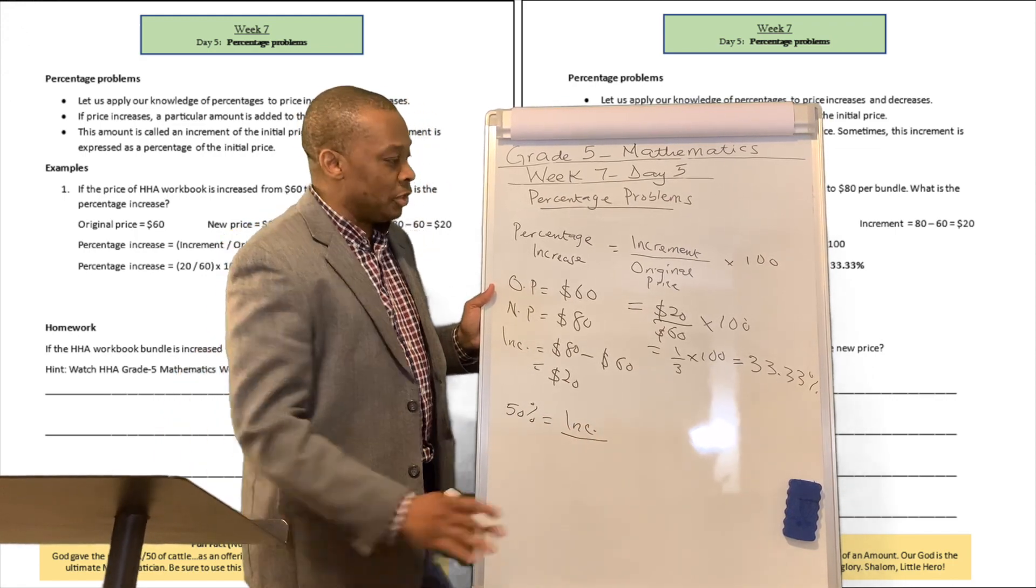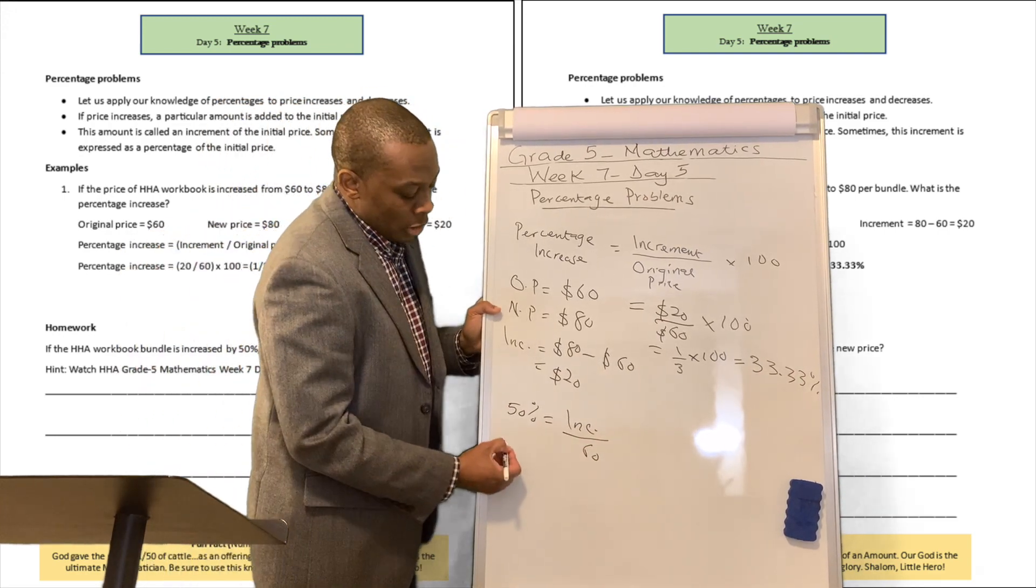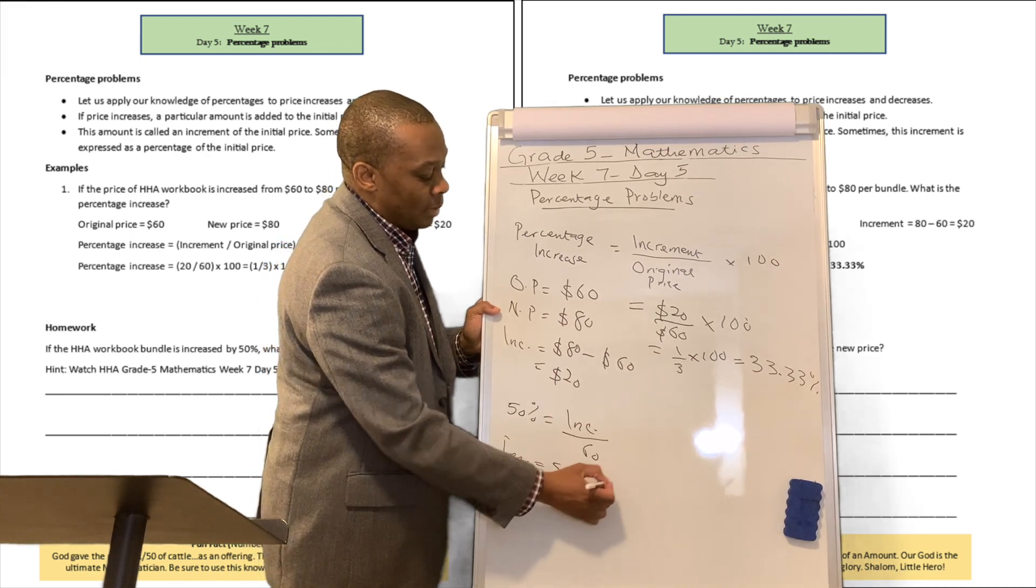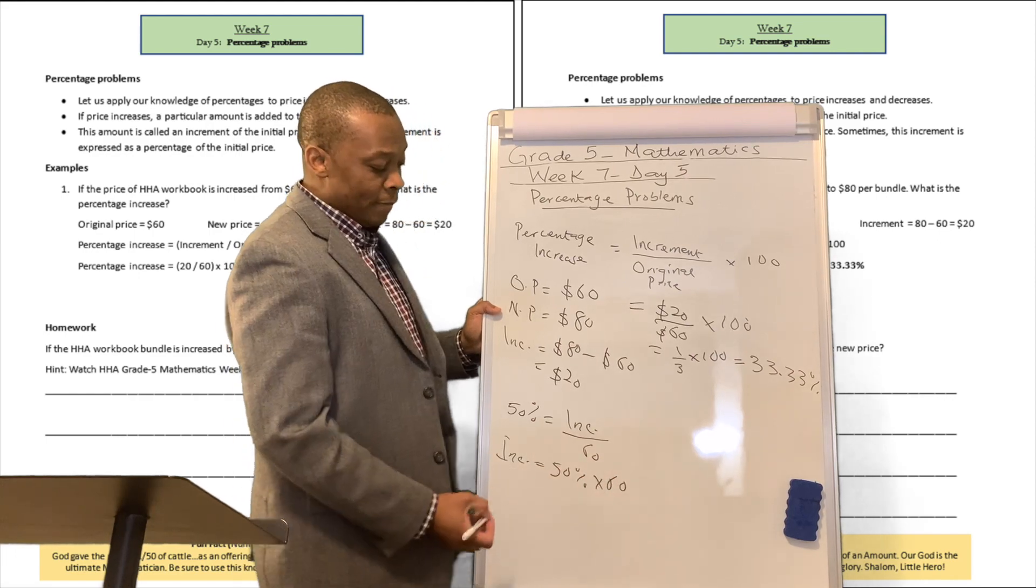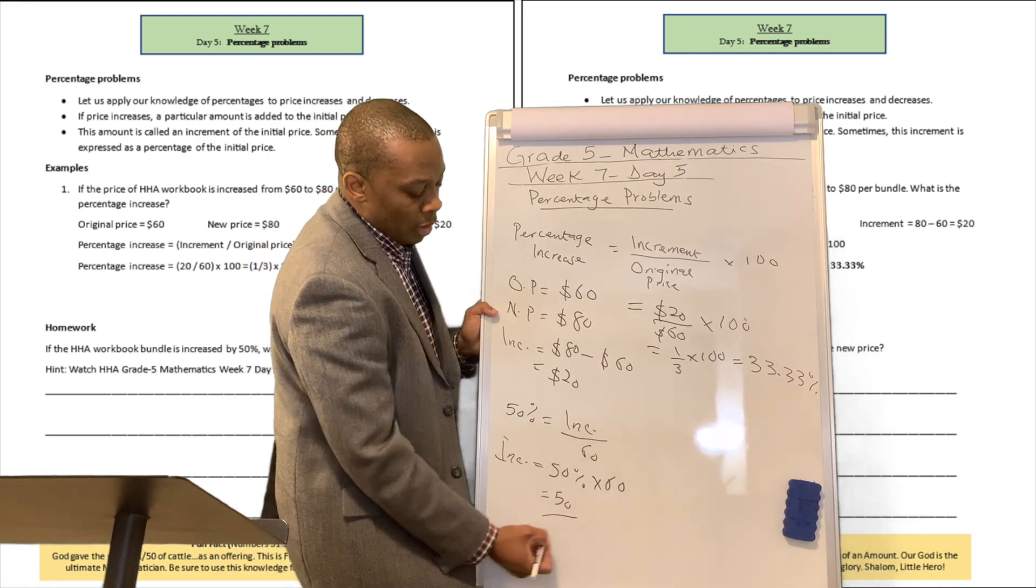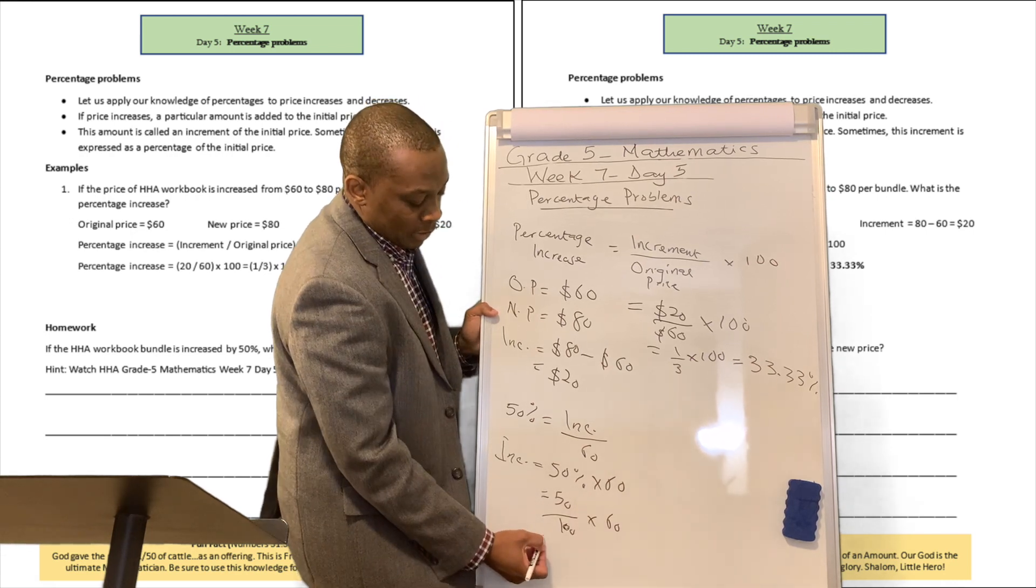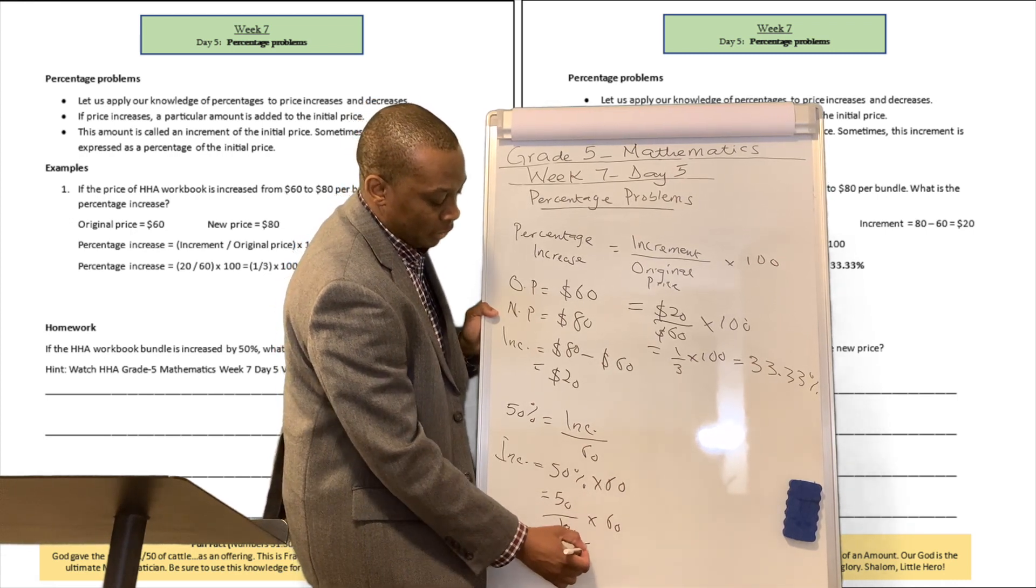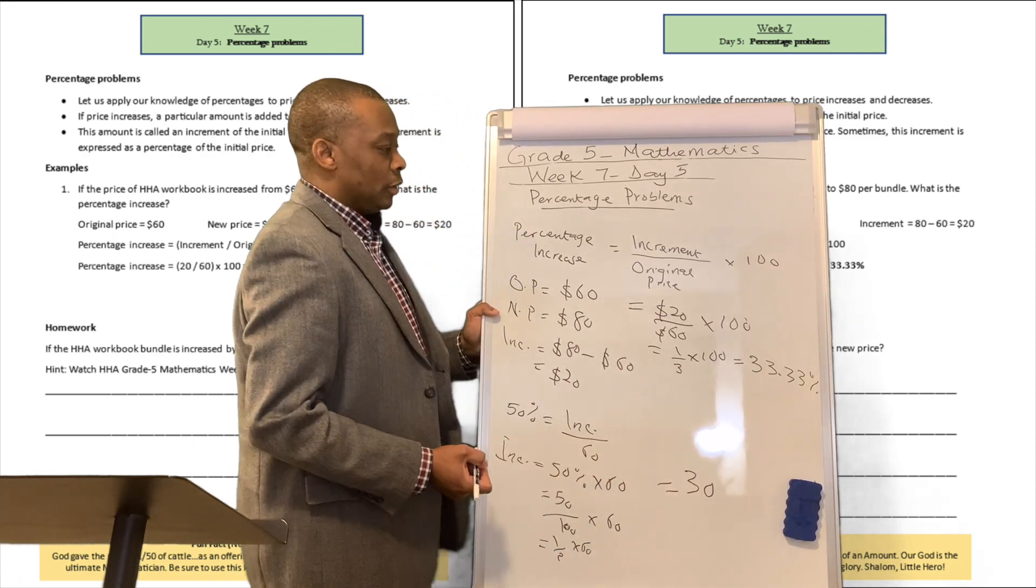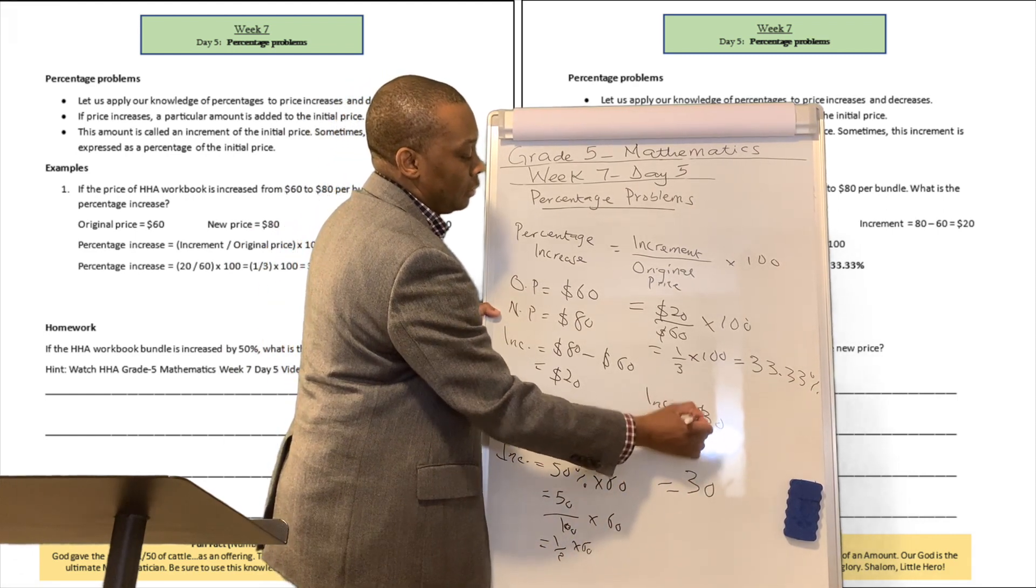And then, original price is going to be $60 still. So, guess what? The new increment is going to be equivalent to 50% multiplied by $60, right? Which is going to be equivalent to 50 divided by 100 multiplied by 60. It's going to be half times 60, and that's going to be 30. All right? So, the increment, the new increment is $30.